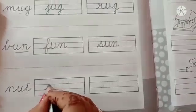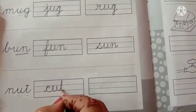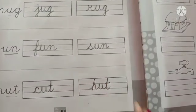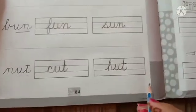Nut. Cat. Hat. Okay, children. This way you complete book page number 84.